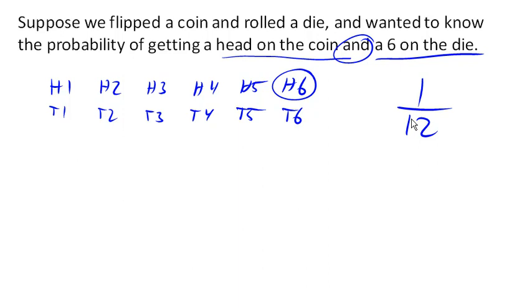Now you might also notice that the probability of getting a head on the coin is 1 out of 2. The probability of getting a 6 on the die is 1 out of 6. And if we were to multiply those, we would get the 1 12th.